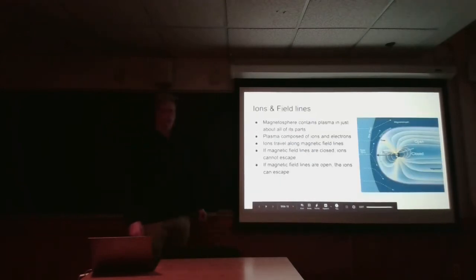I'm just going to preface my talk with a general overview of ions and magnetic field lines. So magnetospheres, most of the regions are filled with a certain amount of plasma. And plasma is just generally ions and electrons. And these ions tend to travel along magnetic field lines.